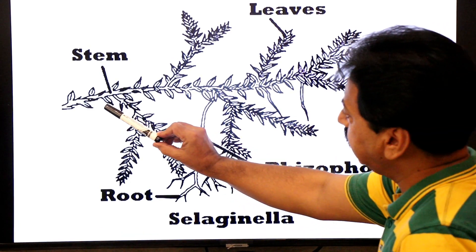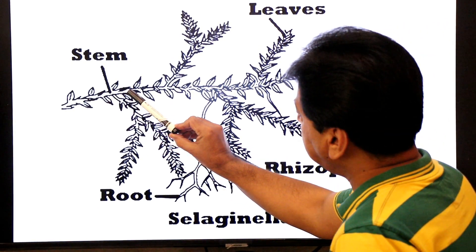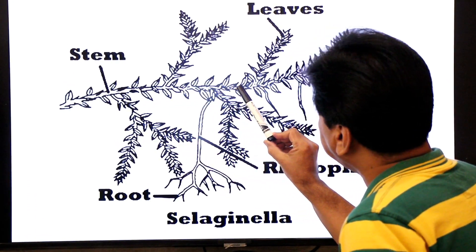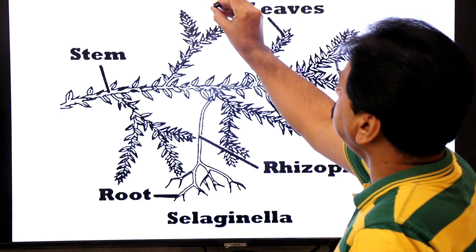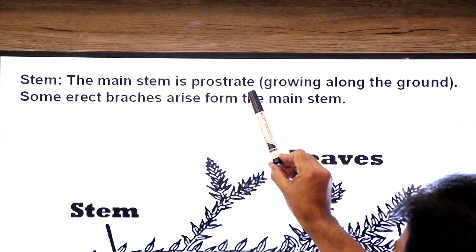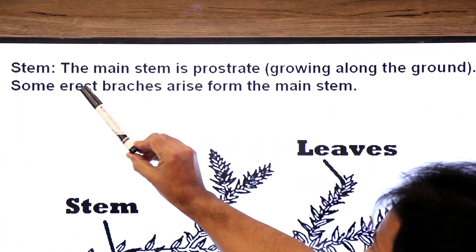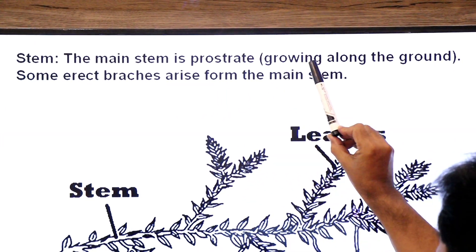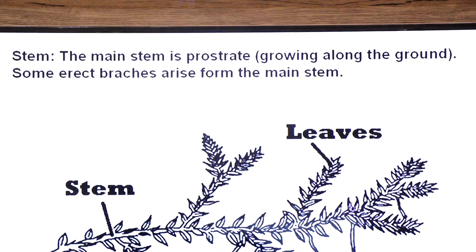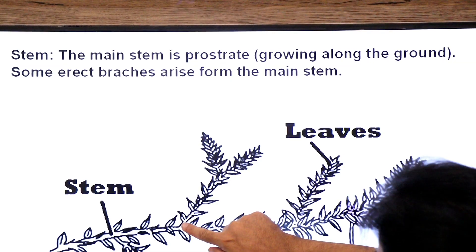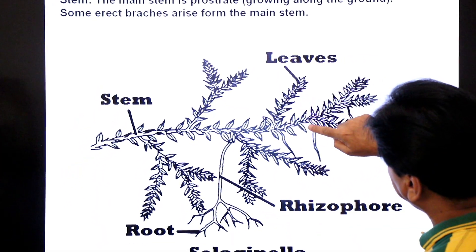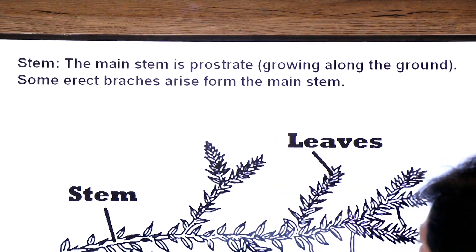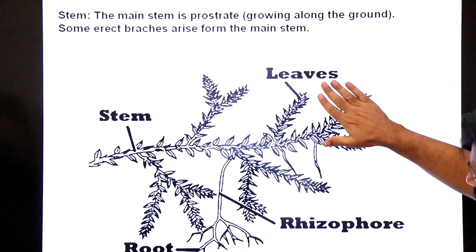Now let's come to the stem. The stem of Selaginella is very close to the ground — this is called prostrate. The main stem is prostrate, meaning it grows along the ground. From this stem, erect branches arise — some erect branches arise from the main stem.